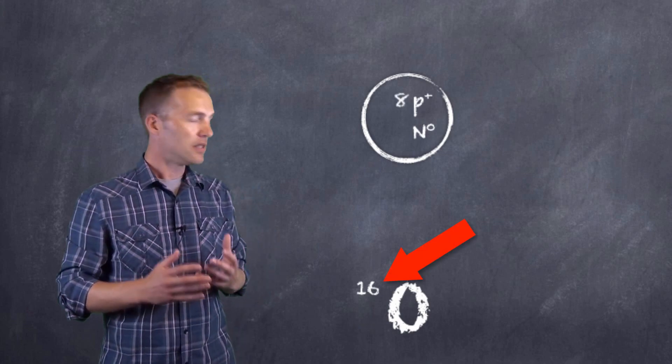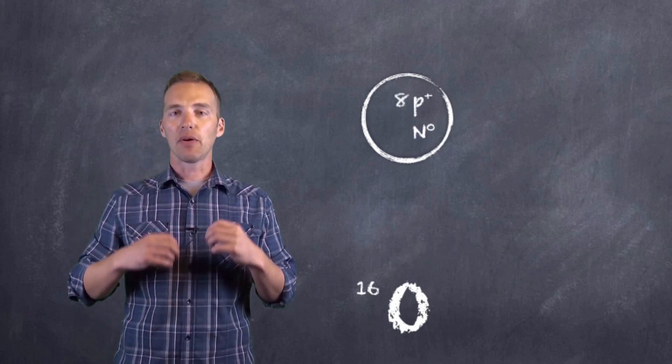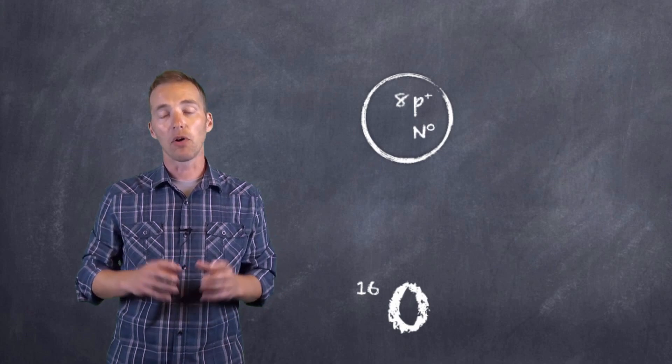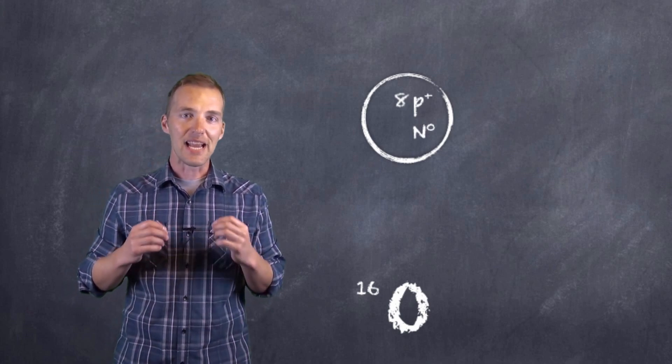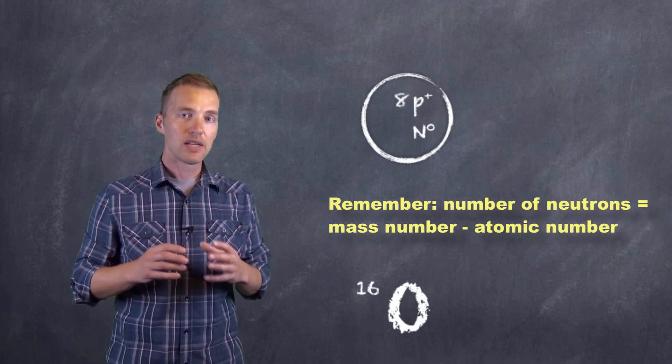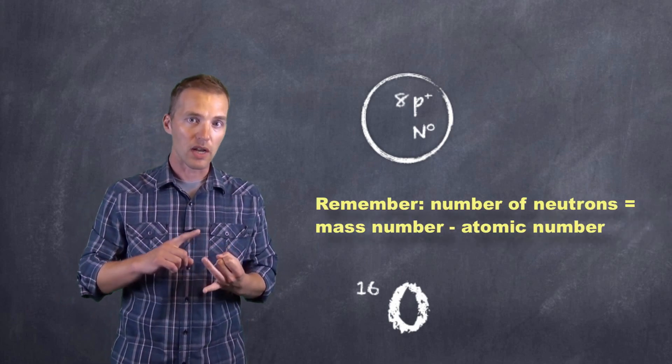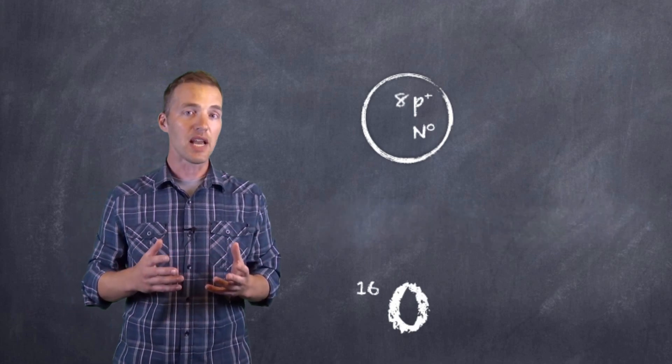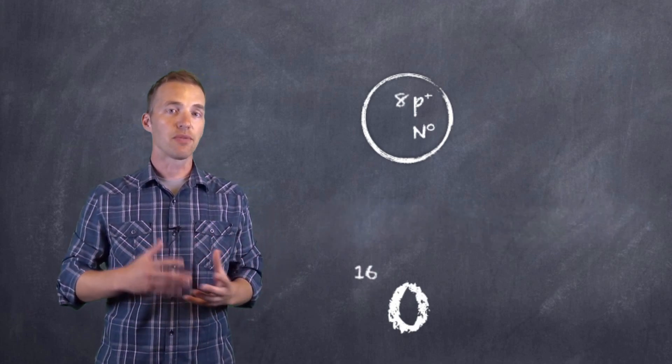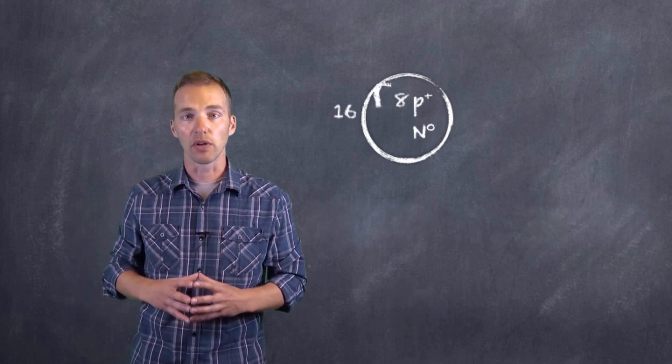The mass number doesn't tell us anything about a particular subatomic particle, but what it does do is allow us to determine the number of neutrons. You see, the mass number tells us the total number of protons and the total number of neutrons. So if we know that the total number of protons is eight, we can just subtract eight from sixteen and we're left with the total number of neutrons.